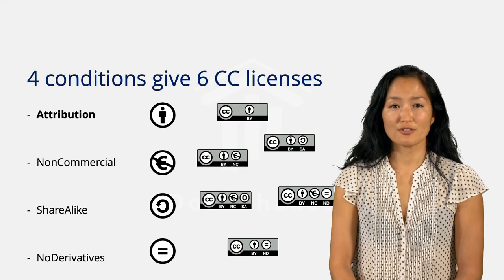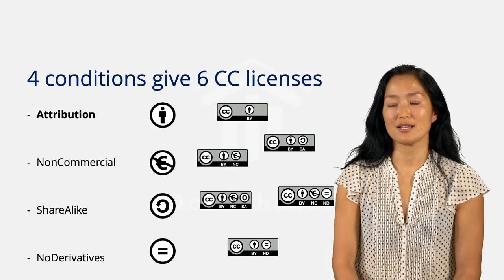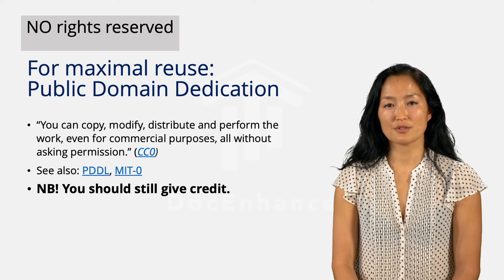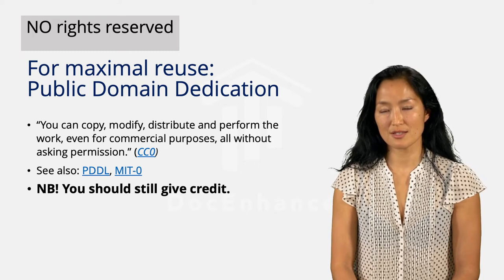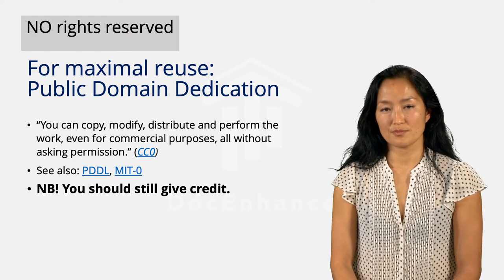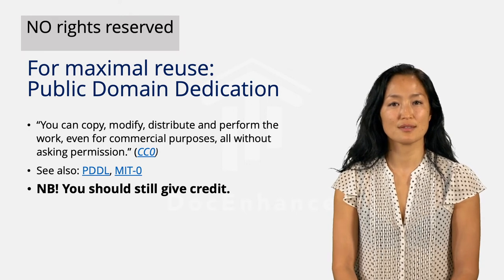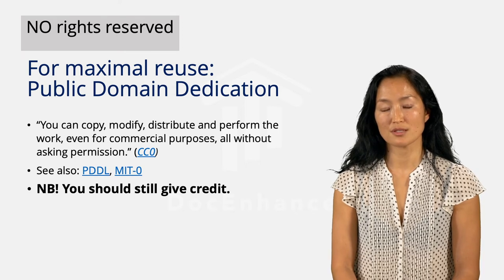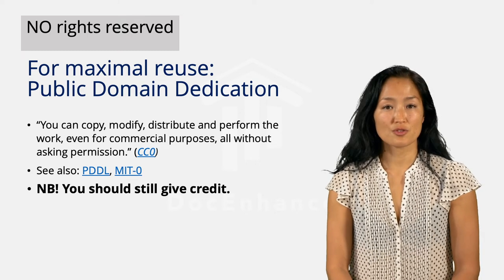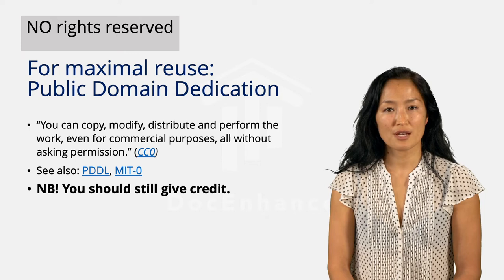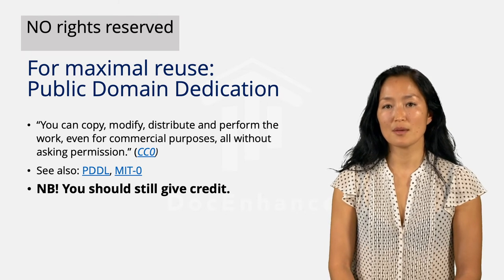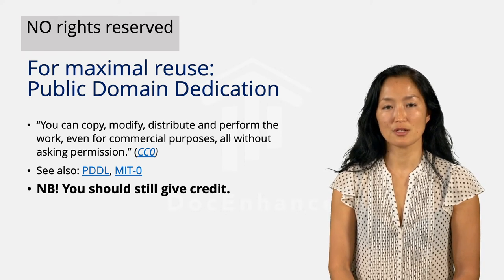If you want to compare, have a look at the attribution and share-alike conditions in Open Data Commons licenses, for example. License conditions give rights owners the possibility to give users extensive reuse rights while reserving some rights for themselves. But there are also no-rights-reserved options. Creative Commons has developed the CC0 tool that allows rights holders to dedicate their works to the public domain. The tool works as a waiver of rights. In those jurisdictions where rights holders cannot waive their intellectual property rights, the tool works as a license. And where it is not possible to license away IP rights, the tool is a promise from the rights holder not to pursue her rights.